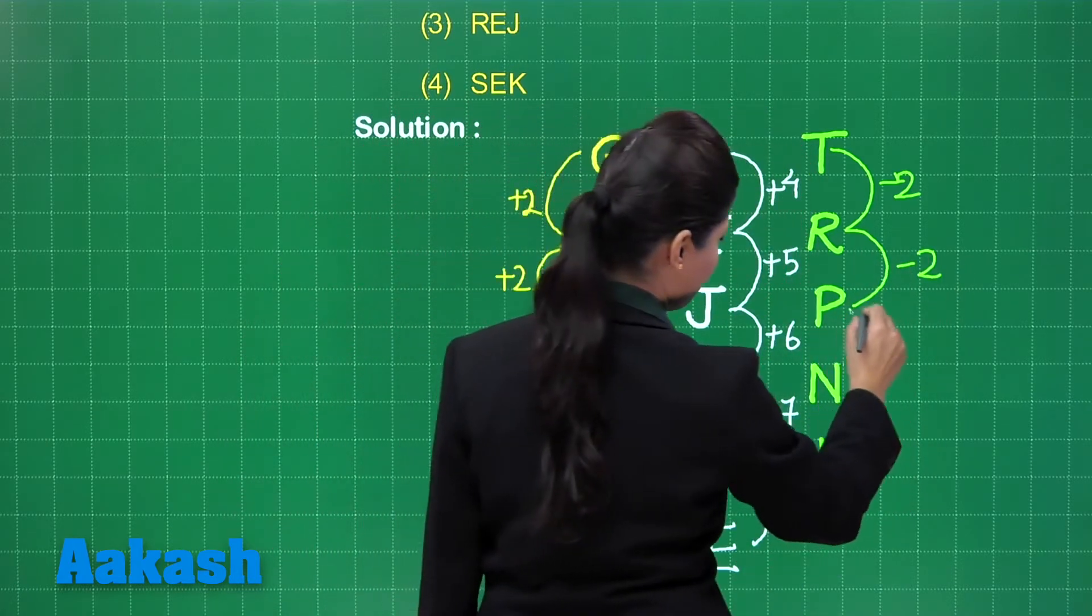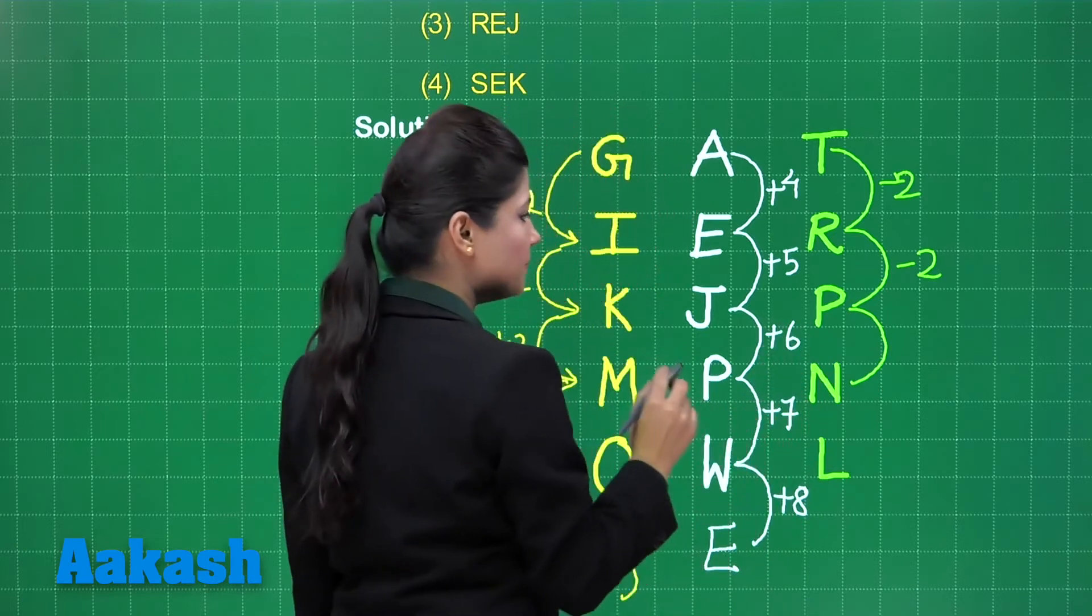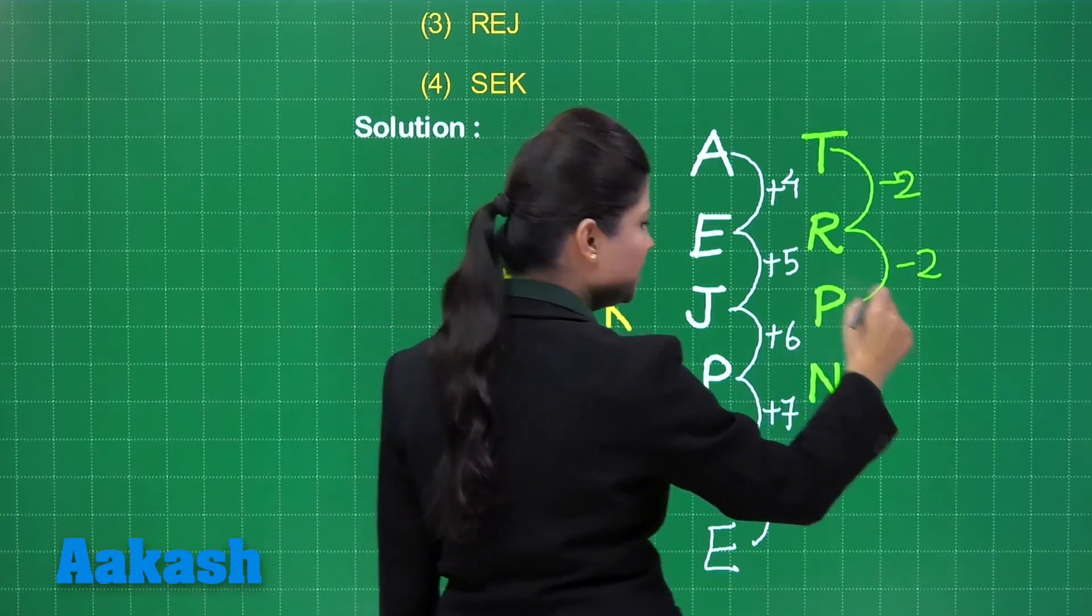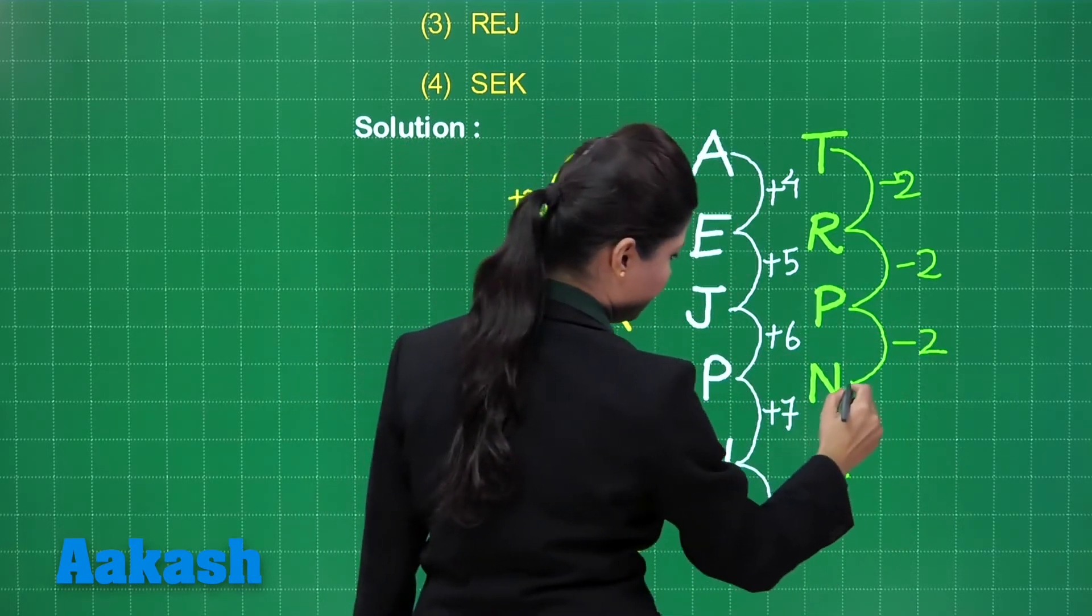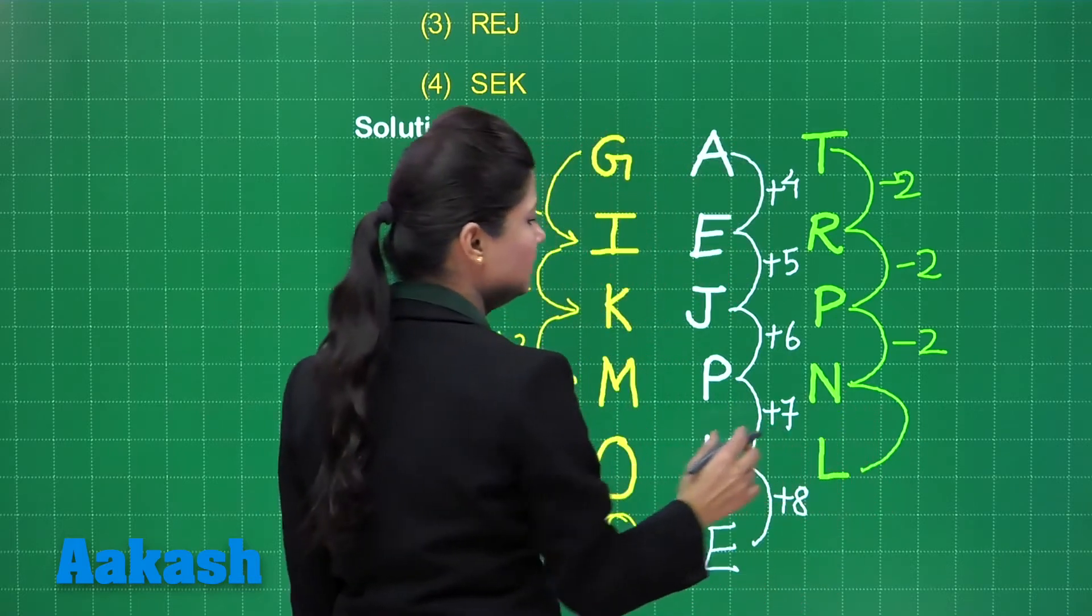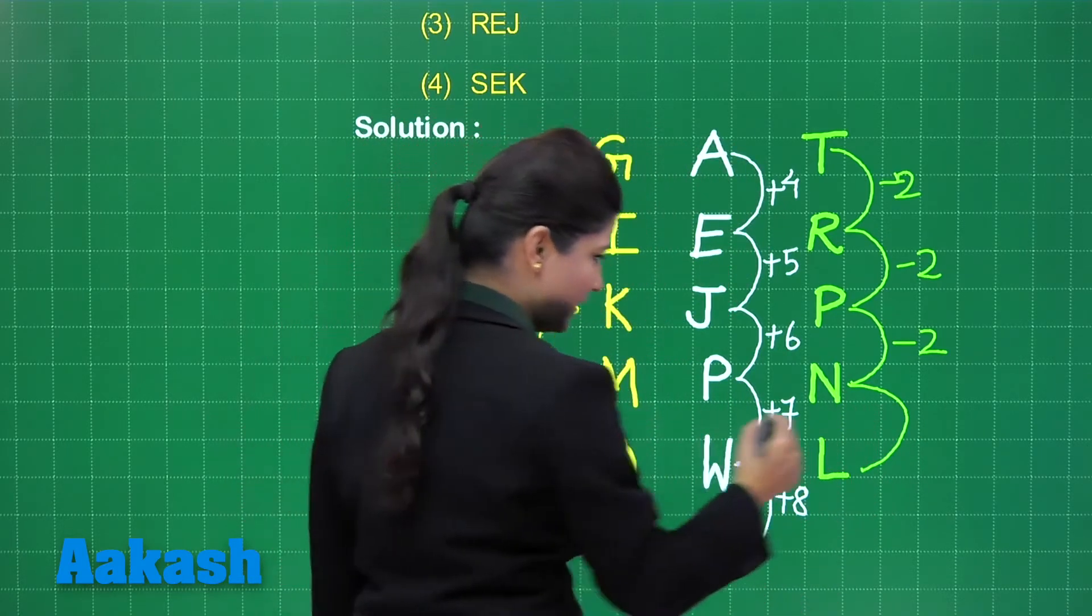In similar manner, N, O, P. So we will move ahead as P, O, N and N, L, M, N. So this will be N, M, L.